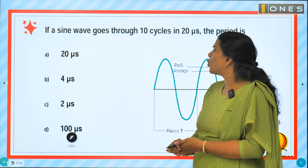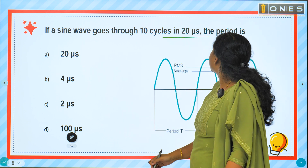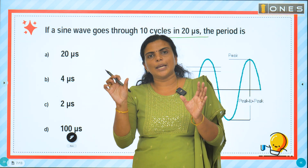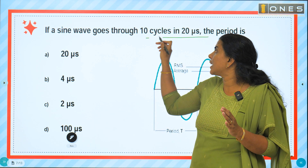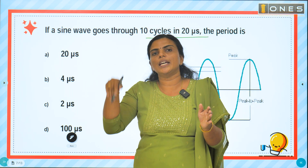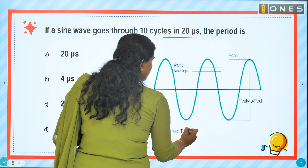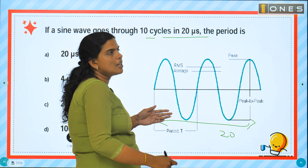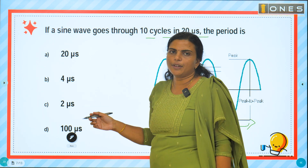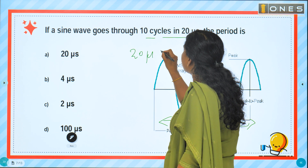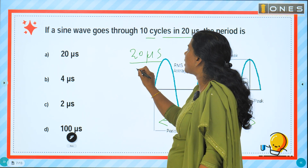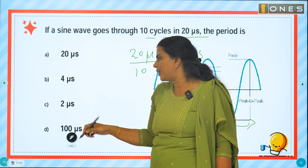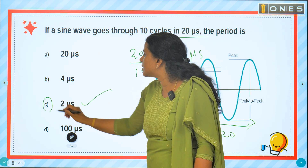If a sine wave goes through 10 cycles in 20 microseconds, the period is? There are 10 cycles in 20 microseconds, so one cycle takes 20 microseconds divided by 10, which equals 2 microseconds. The time period of one cycle of the sine wave is 2 microseconds. Option C is the right answer.